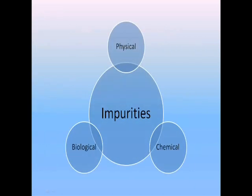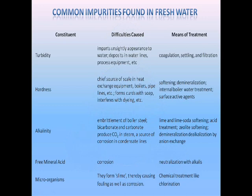These impurities may be physical, chemical, or biological. Physical impurities are mainly due to undissolved suspended matter present in water, and hence we observe turbidity in water. This can be removed by filtration or coagulation techniques.